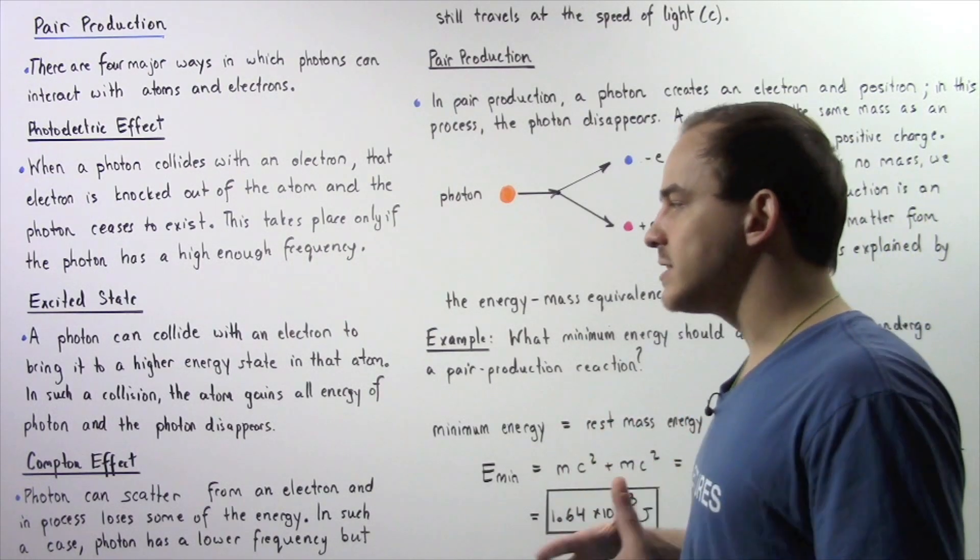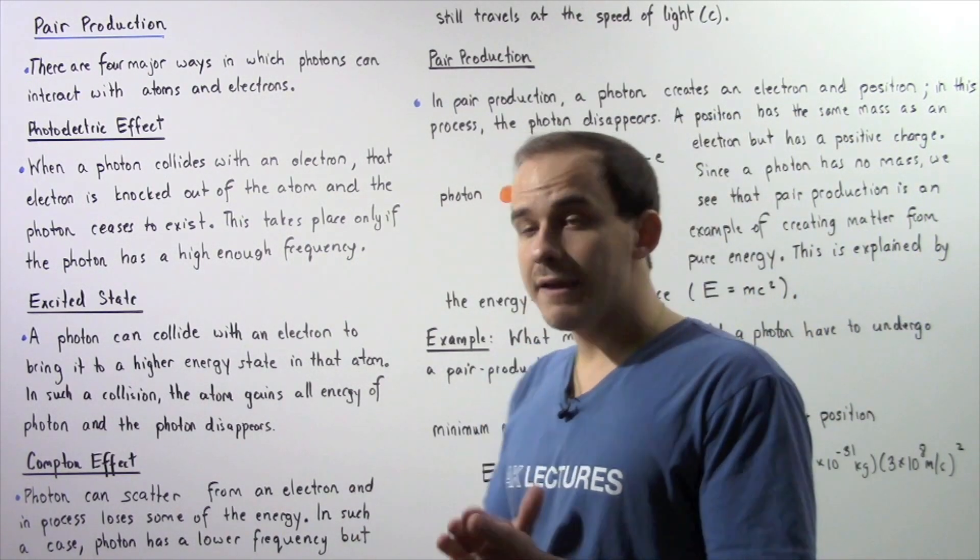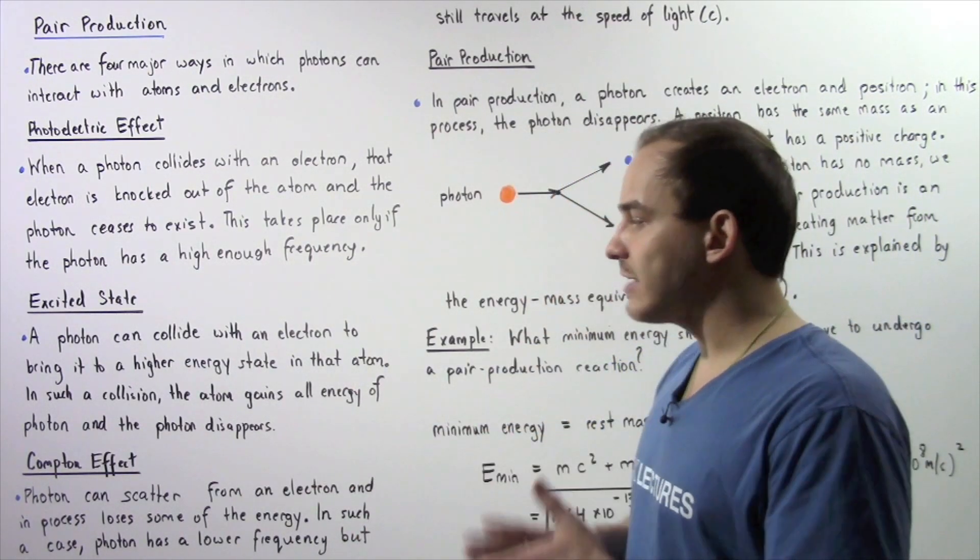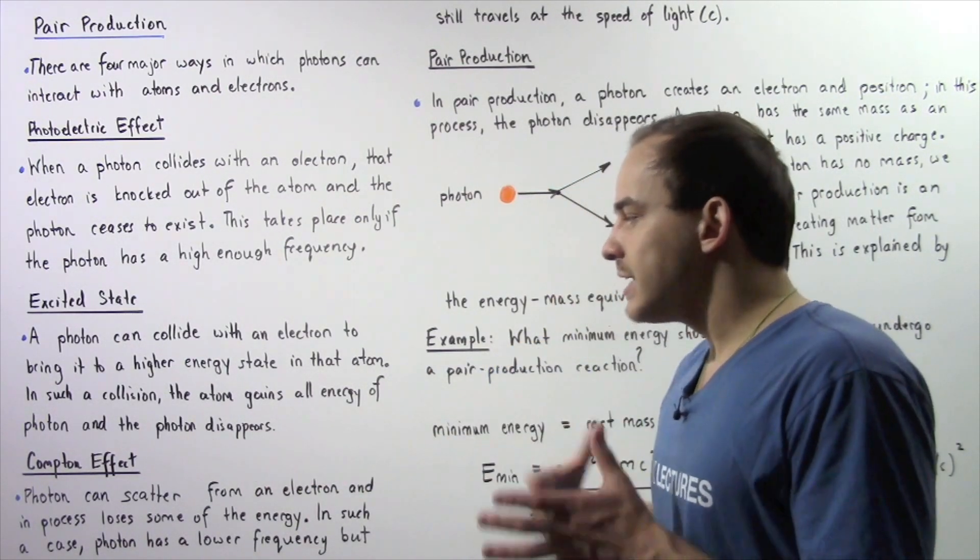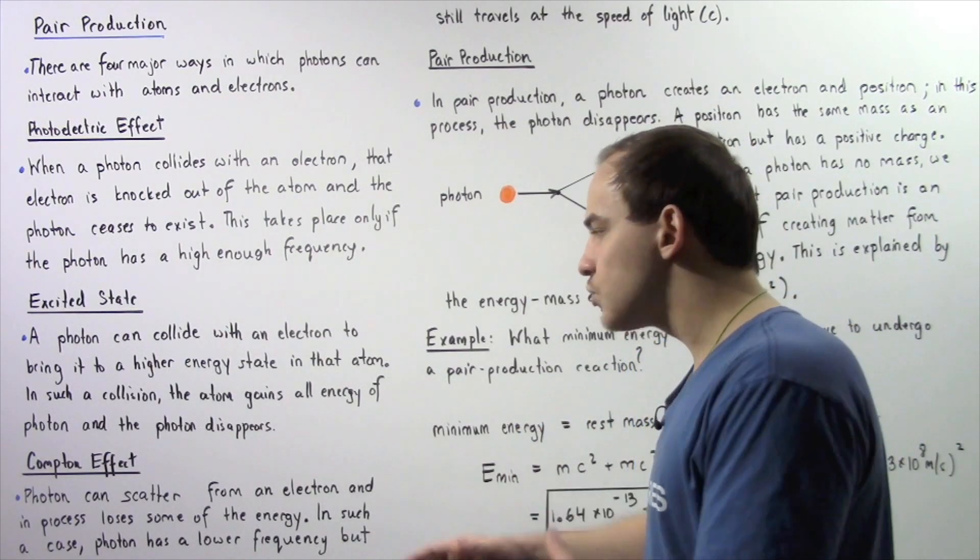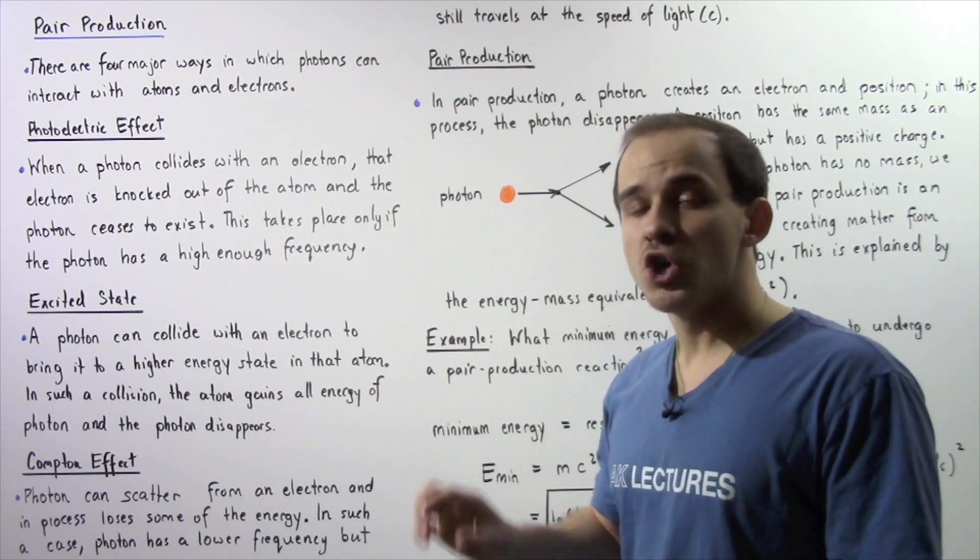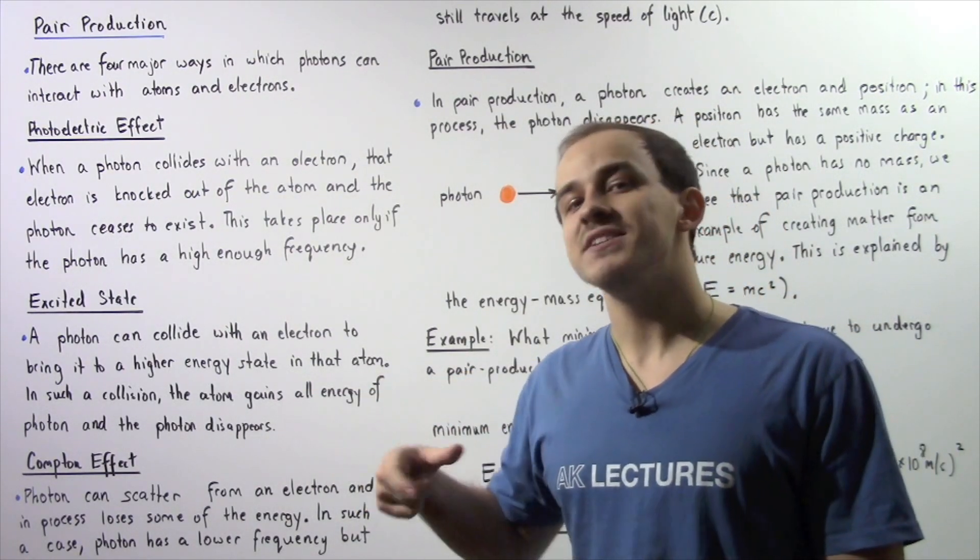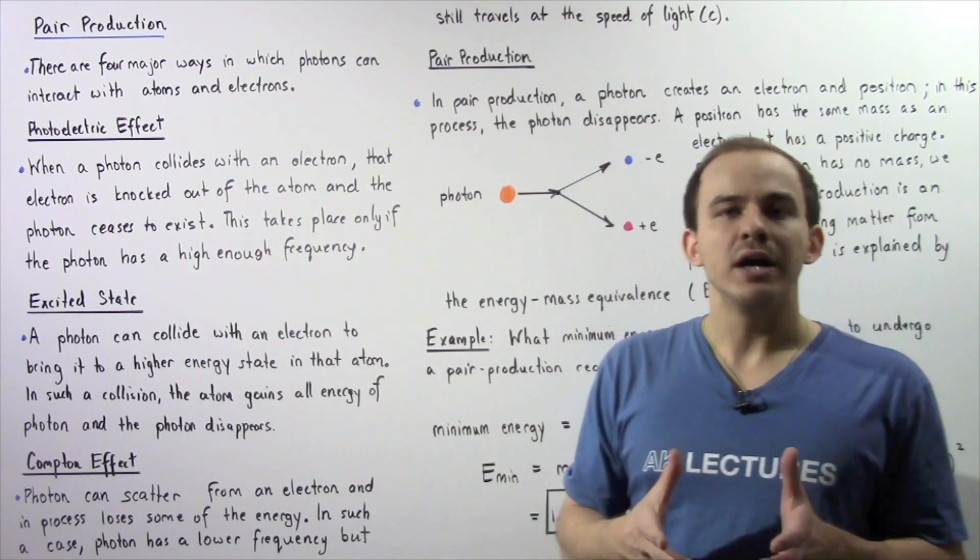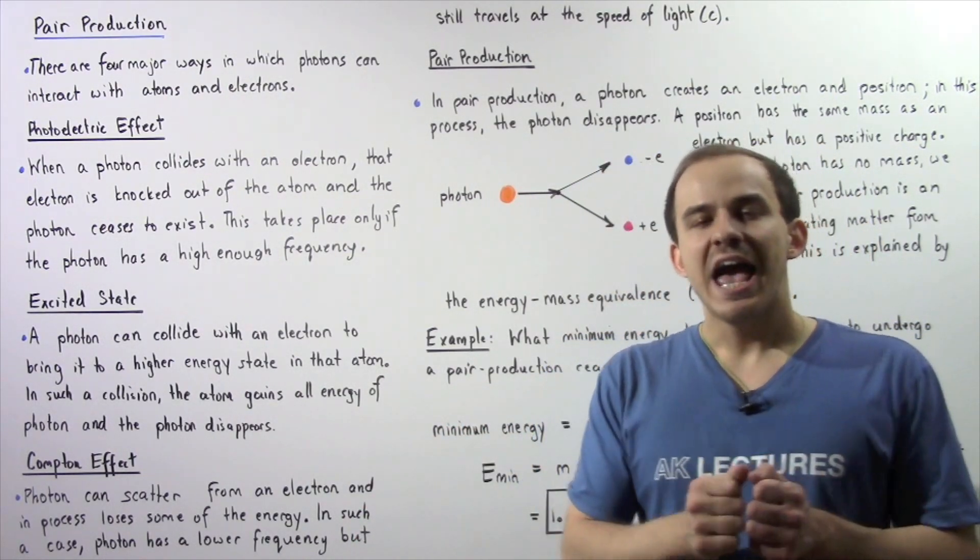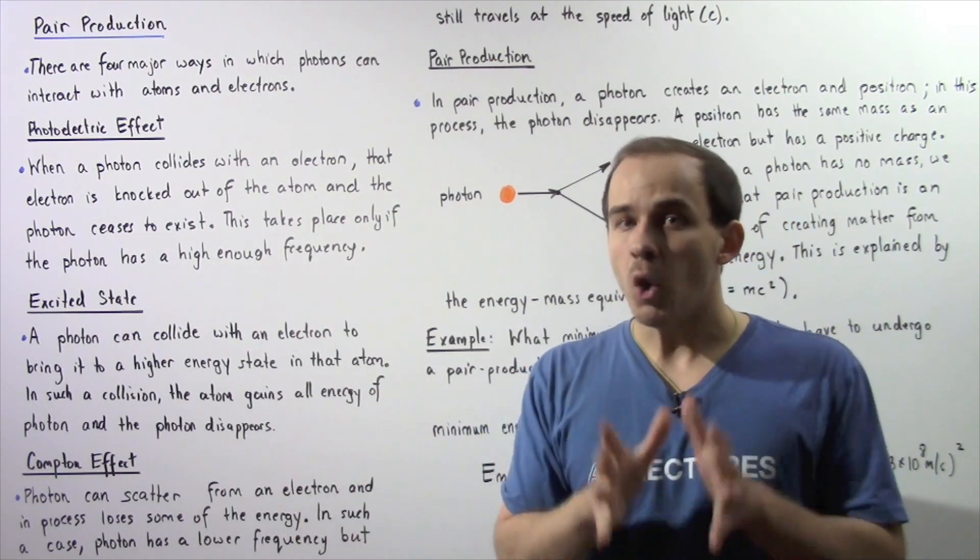Now, let's move on to the third method that is described by the Compton effect, also known as Compton scattering. A photon can scatter from an electron and in the process lose only some of its energy. So the electron gains a certain quantity of kinetic energy and begins to move.